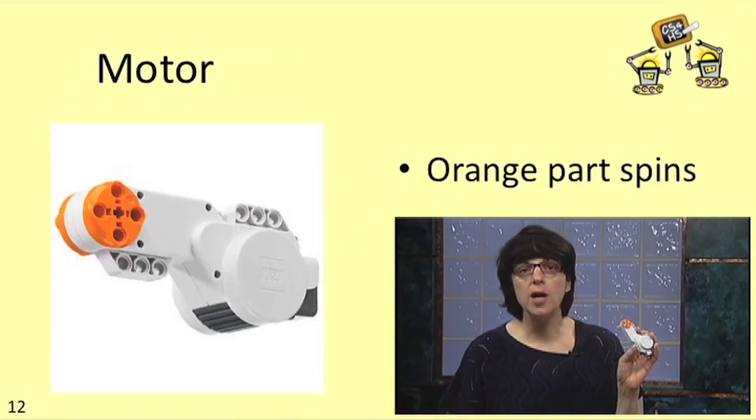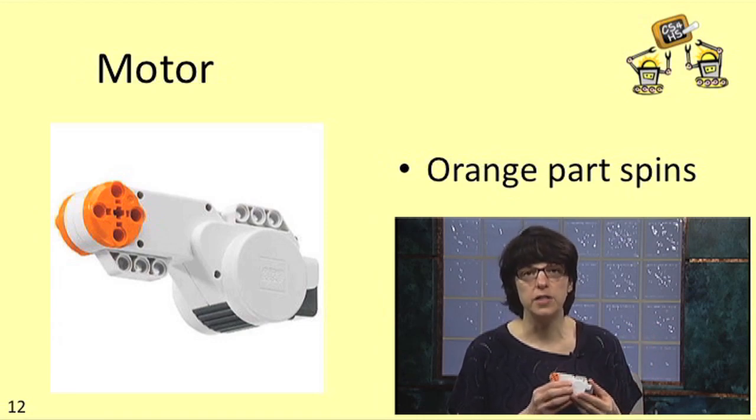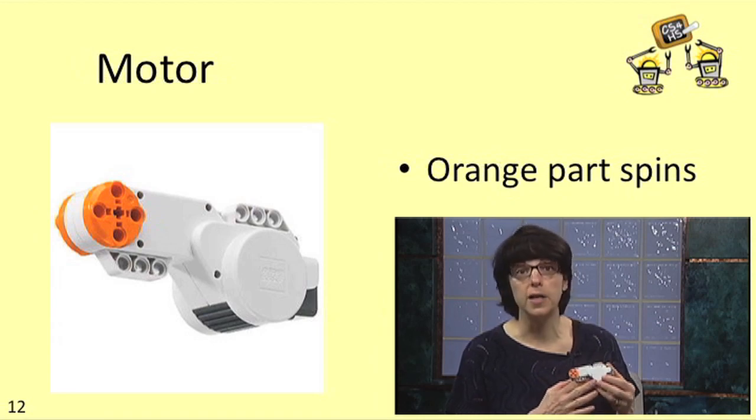The motors are probably the most important part. You get three of these in your kit, though you only need two of them to build the standard robot that LEGO gives you the instructions for in the booklet that comes with the kit.